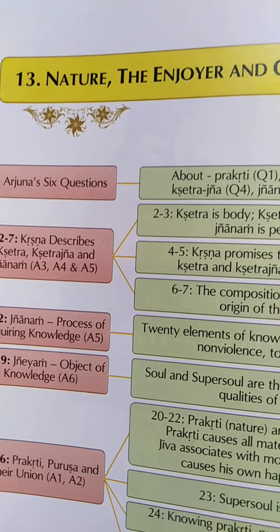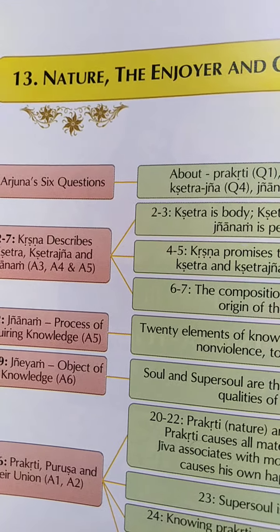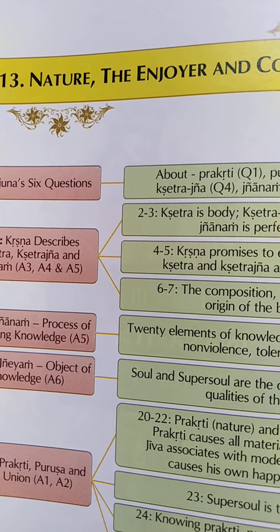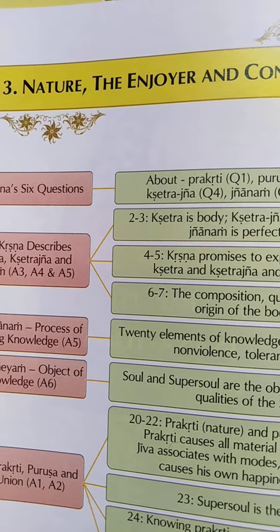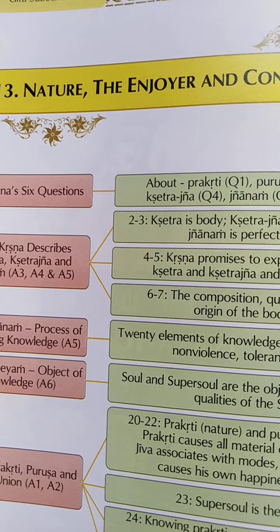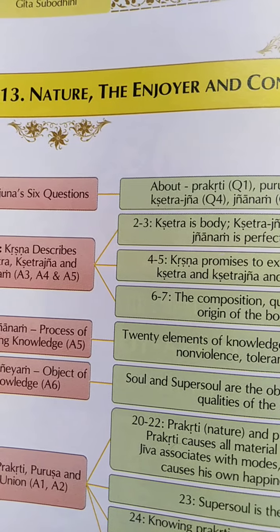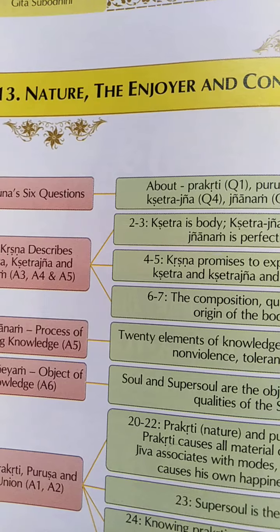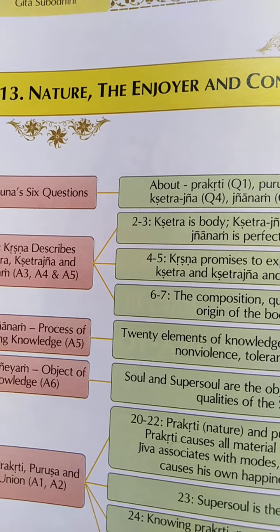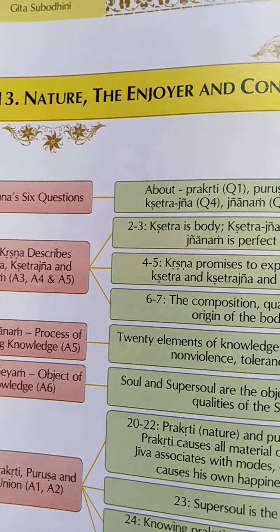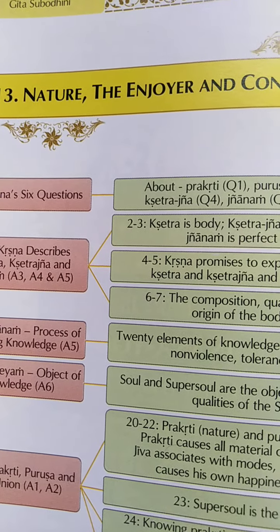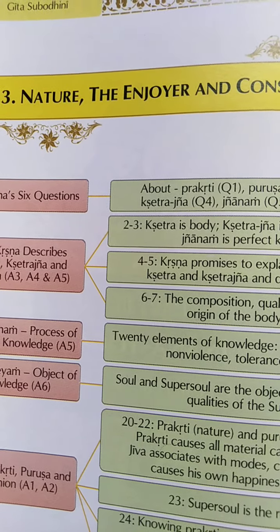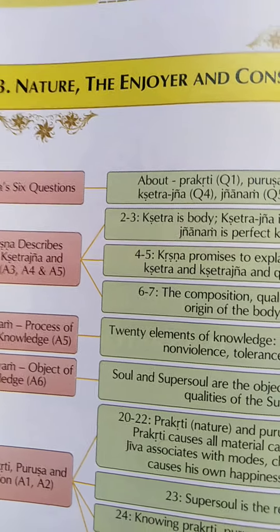The 13th chapter is entitled 'Nature, the Enjoyer and the Consciousness.' Arjuna asks very wonderful questions in this chapter and Krishna gives excellent answers to those questions. The 13th chapter has a total of 35 shlokas, and let us see how the flow of the shlokas is going.